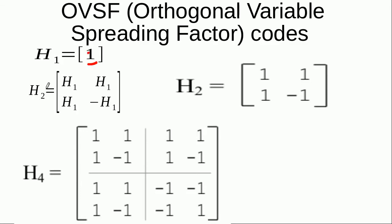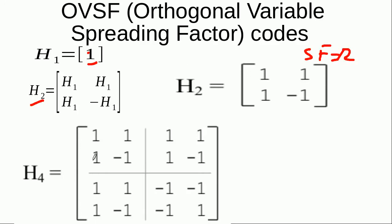We use a matrix operation to generate longer spreading codes with higher spreading factors. To increase the length, we make a matrix H2, where H2 is constructed by placing H1 in each position and the negative of H1 in the last position. When I do this I get: 1, 1, 1, −1. Here I can see there are two chips in these codes, so this code has a spreading factor of 2.